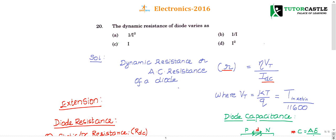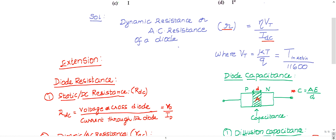Question number 20: the dynamic resistance of the diode varies as — options: 1/i², 1/i, i, i². This is a simple, formula-based question. The dynamic resistance or AC resistance of the diode is denoted with the letter r_ac.